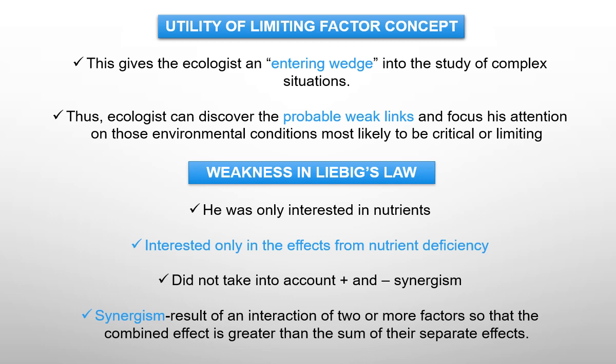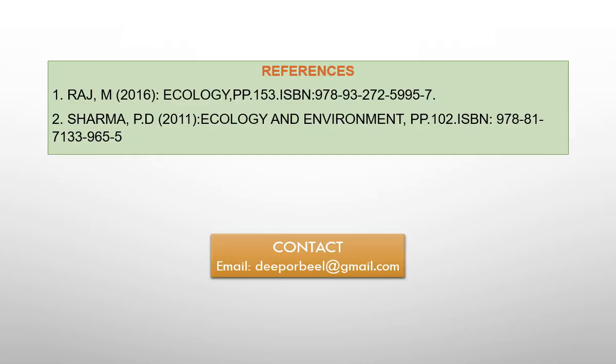Finally, we can understand that an ecosystem relies on a set of complex factors to succeed, like availability of food and water, and any issue at its lowest minimum or highest limit represents a limiting factor to the community. For preparation of this presentation, I consulted two books: Mandib Ras's Ecology and P.D. Sharma's Ecology and Environment. Thank you very much.